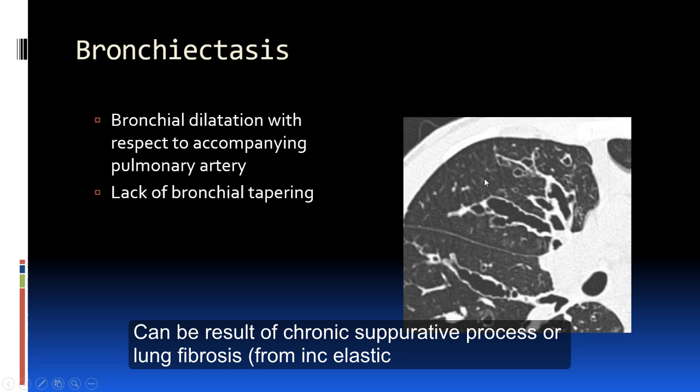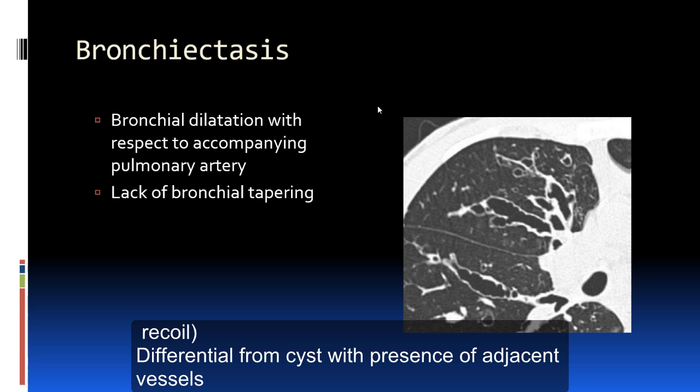Bronchiectasis can be a mimicker for cystic lung disease. If you have cystic bronchiectasis, it can look cystic on a CT scan. However, this can be distinguished by finding the pulmonary vasculature — specifically the pulmonary artery — next to the bronchioles.